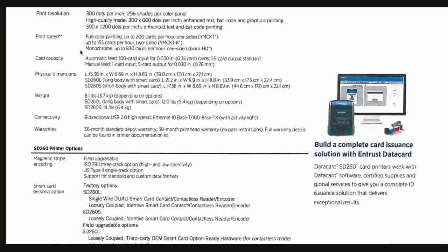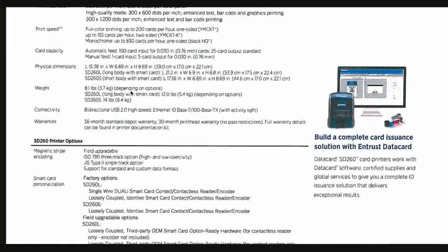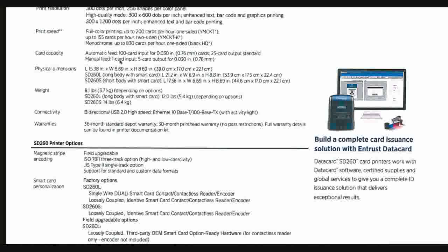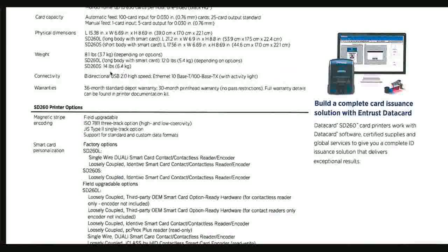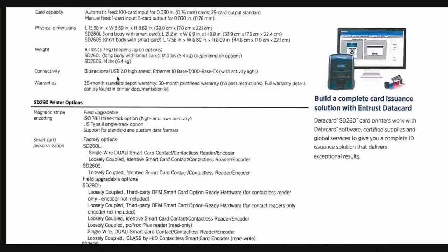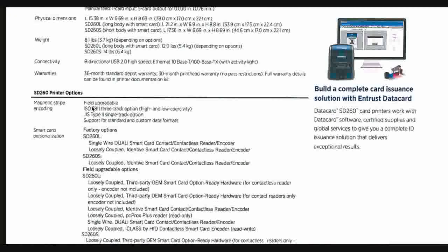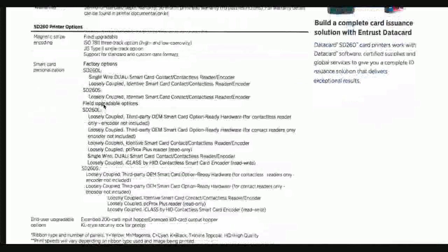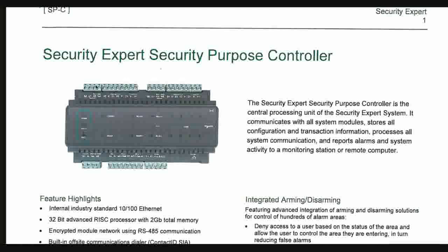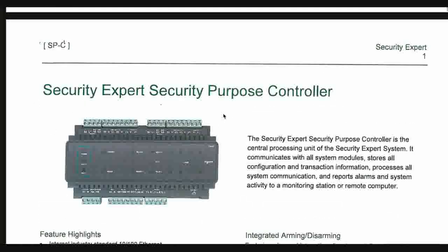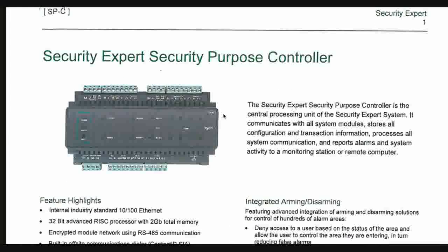For monochrome printing, the speed is 830 cards per hour for one side. The datasheet also covers card capacity, physical dimensions, and connectivity — USB 2.0 bi-directional or Ethernet connection — along with warranty details. Finally, the access control server used in the system will be discussed in another video.